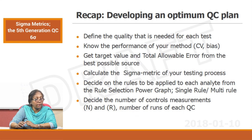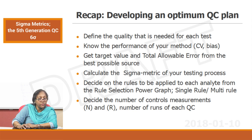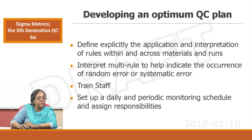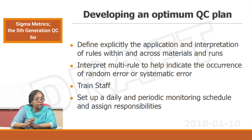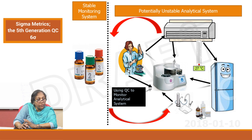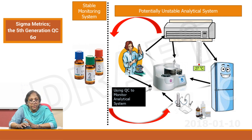Statistical measures include using multi-rules, looking back to previous runs, and increasing the number of QCs and runs of QCs. Non-statistical methods include deploying staff with special training for low sigma tests and increasing supervision. Developing an optimum QC plan: define the quality needed for each test, know the performance — CV and bias — get target values, get TEA from the best possible source, calculate the sigma metric, decide on the rules to be applied on each analyte from the power function graph — whether single or multi-rule — decide the number of control measurements, train your staff, and set up daily and periodic monitoring schedules with assigned responsibilities. To conclude, a stable monitoring system using internal quality control will safeguard a potentially unstable analytical system if you understand and implement all these things adequately. Thank you.